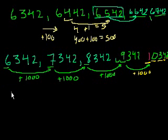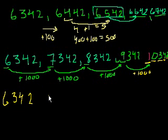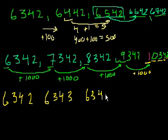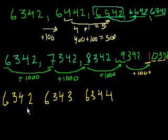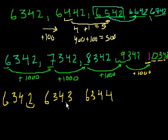Let's do another one, always starting with 6,342. In some ways, this is the simplest — the thousands are staying the same, the 6,000, the 300s are staying the same, the 40s staying the same. We're just incrementing the 1s place by 1 every time. When you increment the 1s place by 1, you're just incrementing by 1 — not anything fancier than that.